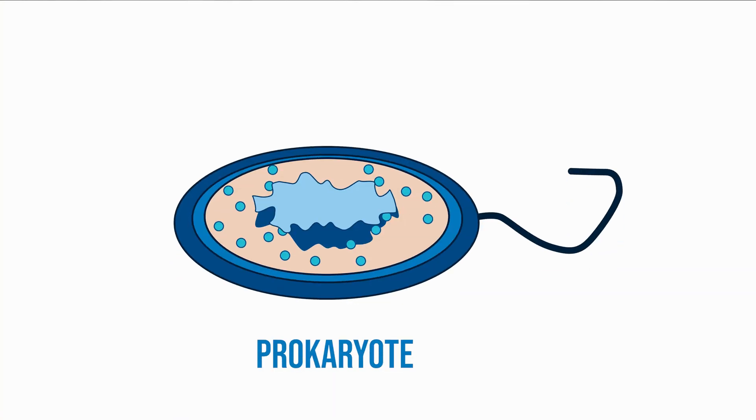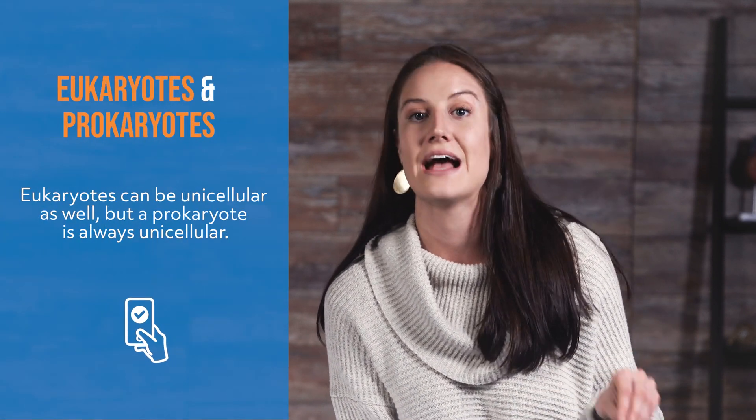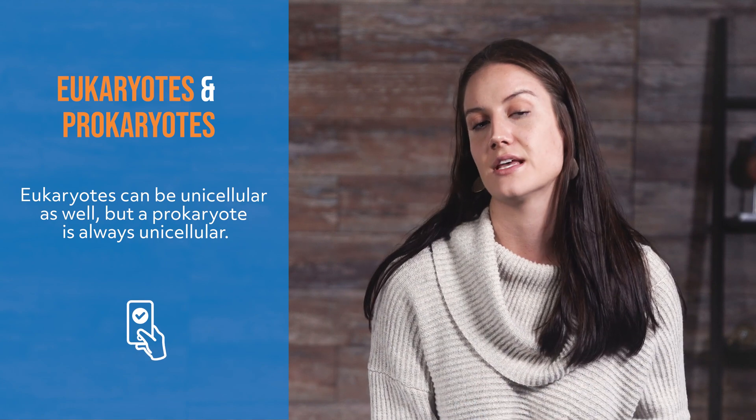Prokaryotic cells, on the other hand, are not quite as complex as eukaryotic cells. A prokaryote is a non-complex, single-celled organism that does not contain a nucleus, nor does it contain any membrane-bound organelles. It's important to note that eukaryotes can be unicellular as well, but a prokaryote will always be unicellular. All of a prokaryote's DNA is circular-shaped and floats freely within the cytoplasm of the cell.